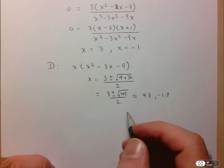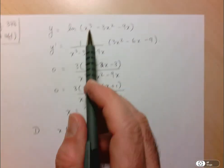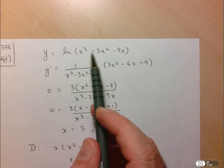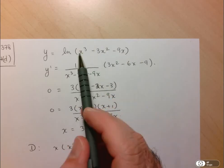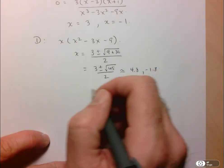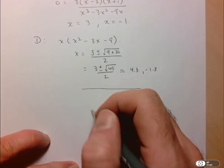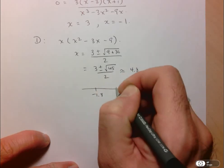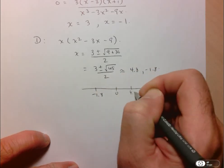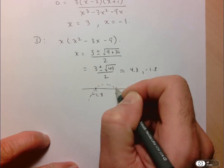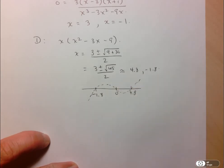So if I want to determine when this expression up here is positive, notice that it's a cubic with a positive leading coefficient. So if I want to figure out where this is positive, I can make a number line. The zeros are negative 1.8, zero and 4.8. And since it's a cubic with a positive leading coefficient, I know it's going to have this form here.